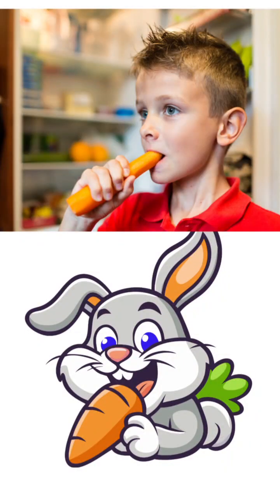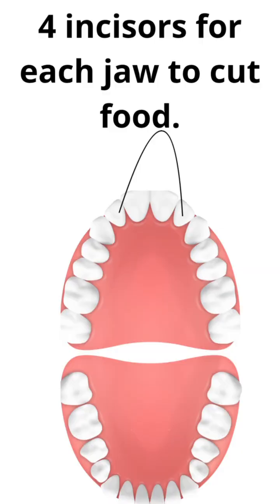Look at this picture and put your fingers on your front teeth. You can cut the carrot by using them, right? There are 4 incisors for each jaw to cut food. So, incisors are used to cut food.